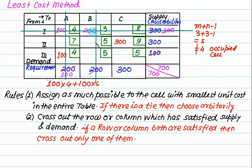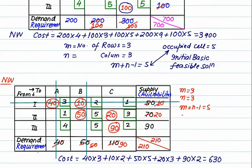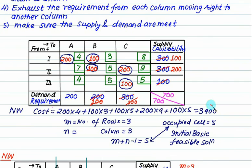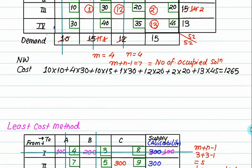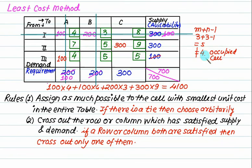The cost is: 100 into 1, then 4; 200 into 3 is 600; total is 4100. The same problem we solved initially gives a cost of 3900. So 3900 is a lower cost compared to this method's cost of 4100. This solution is not accepted because we are not satisfying m plus n minus 1 equal to the number of occupied cells.